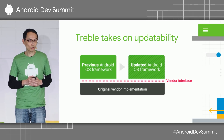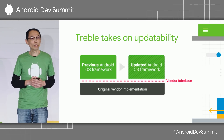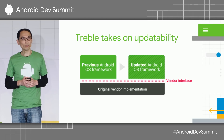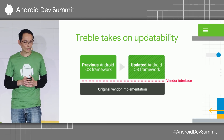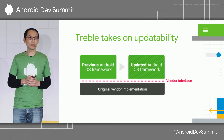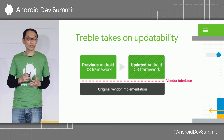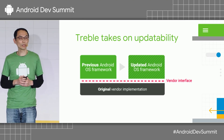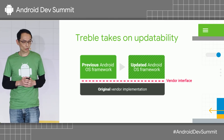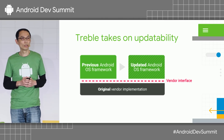Remember Project Treble? We took on the Android updatability problem with Treble about two years ago in the Oreo timeframe. We re-architected Android to have a clear boundary between the Android framework and the hardware-related vendor implementation. With this boundary clearly defined, we no longer need to update the vendor implementation with the Android framework, which greatly reduced the cost and time for device makers to update their Android framework.